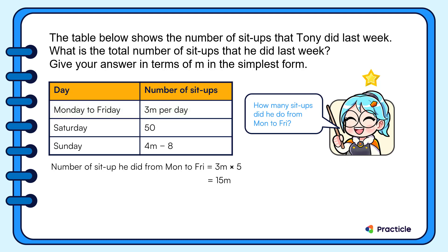Then what do you think we should do next? Yes, I hope you said add the number of sit-ups that he did on Saturday and Sunday to it. What do we get when we work out 15M plus 50 plus 4M minus 8?